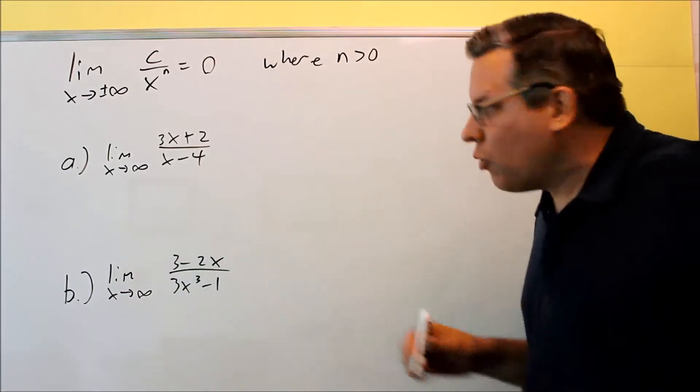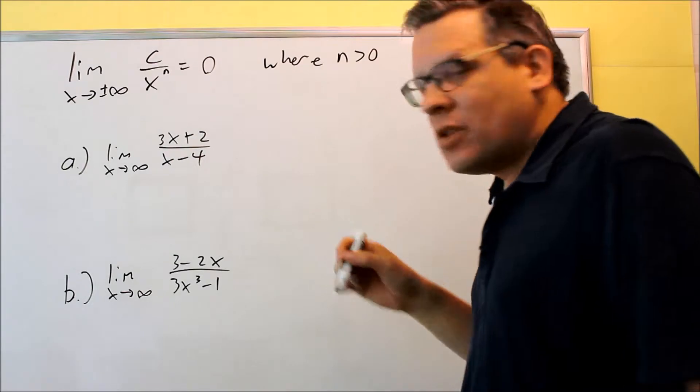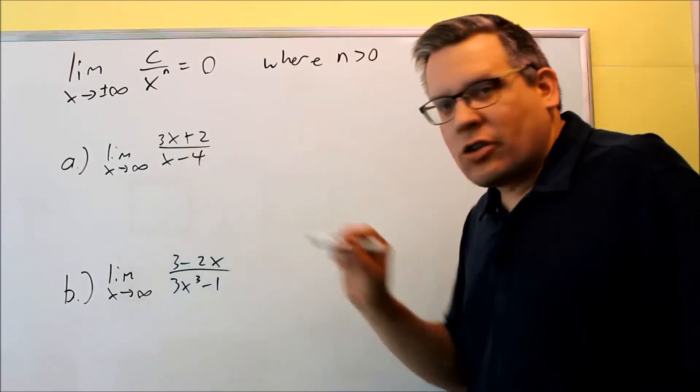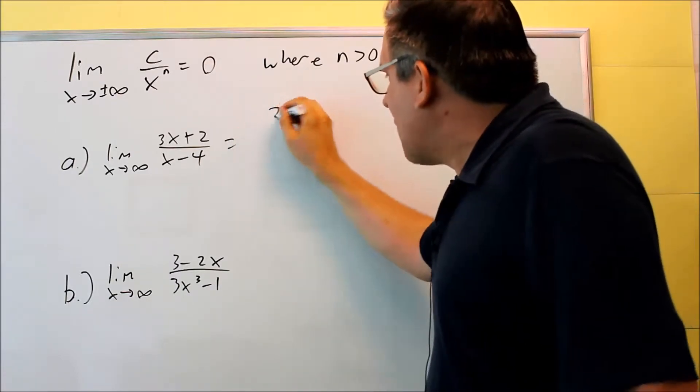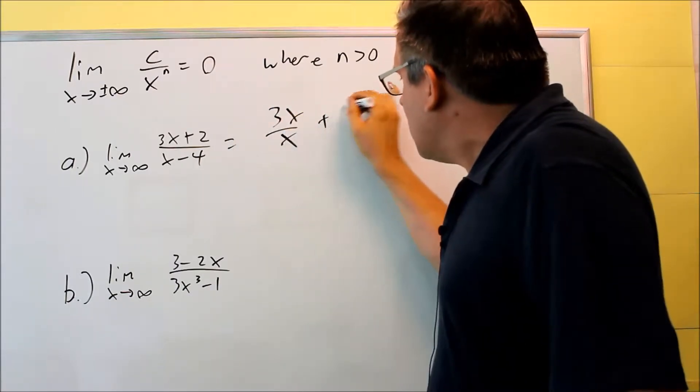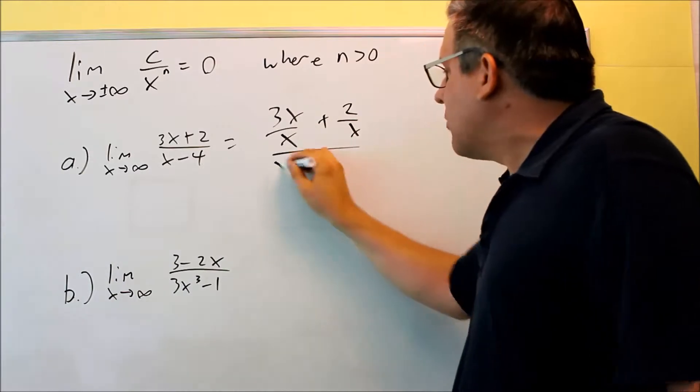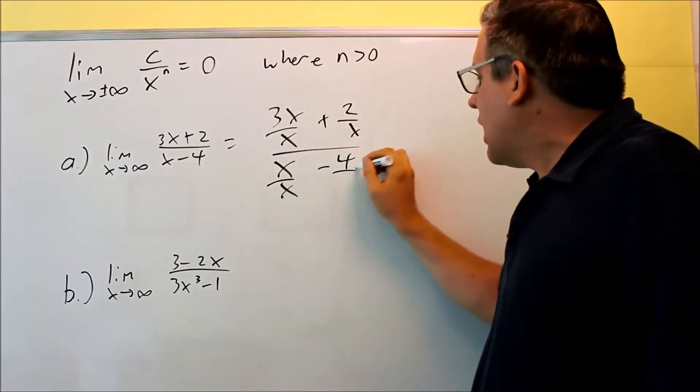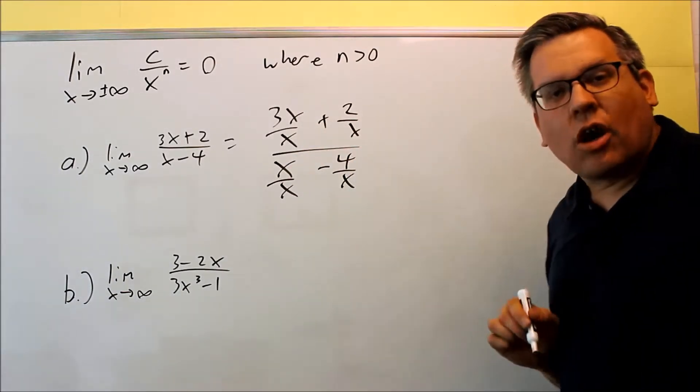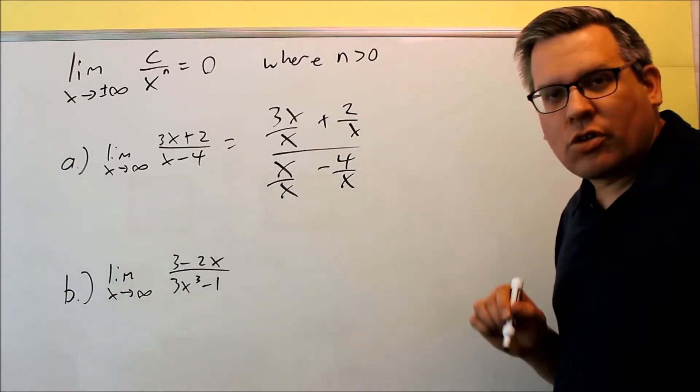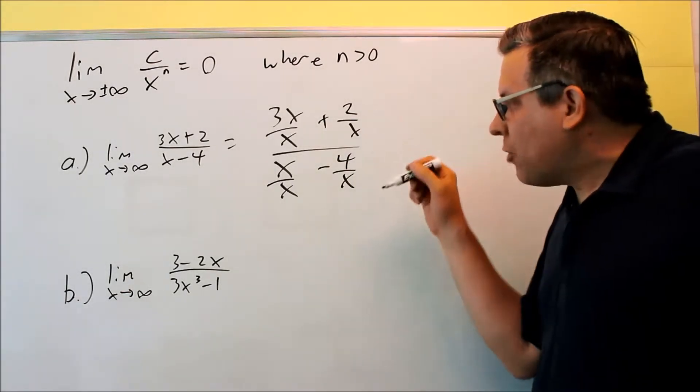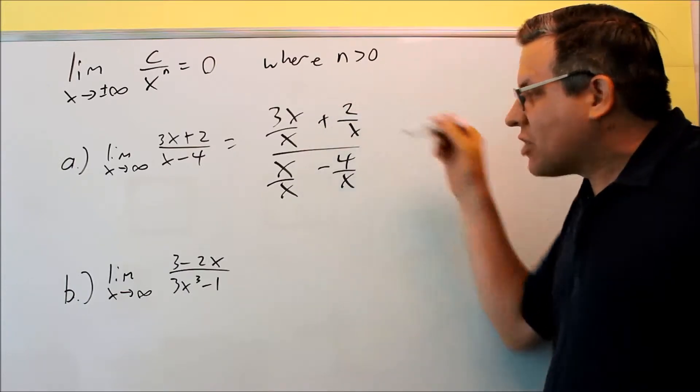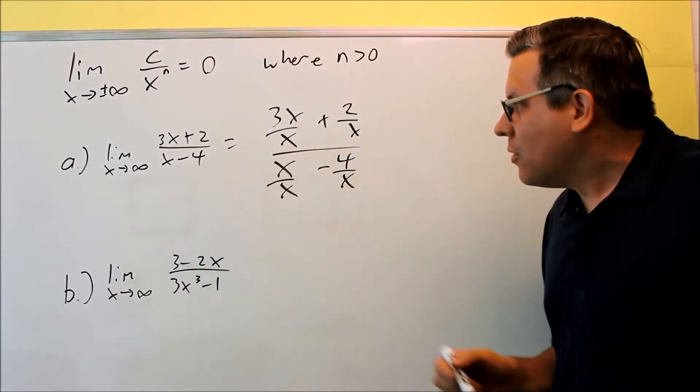So for this one, what we're going to do is we're going to take everything top and bottom divided by the highest power in the denominator. The highest power in the denominator is going to be X. So I'm going to take everything on the top and bottom and divide it by X. As long as you're doing the same thing top and bottom, that means this is algebraically correct. Essentially what you're doing is you're multiplying the top and bottom by 1 over X in order to do that, but we can just simply divide everything top and bottom by the highest power of the bottom.